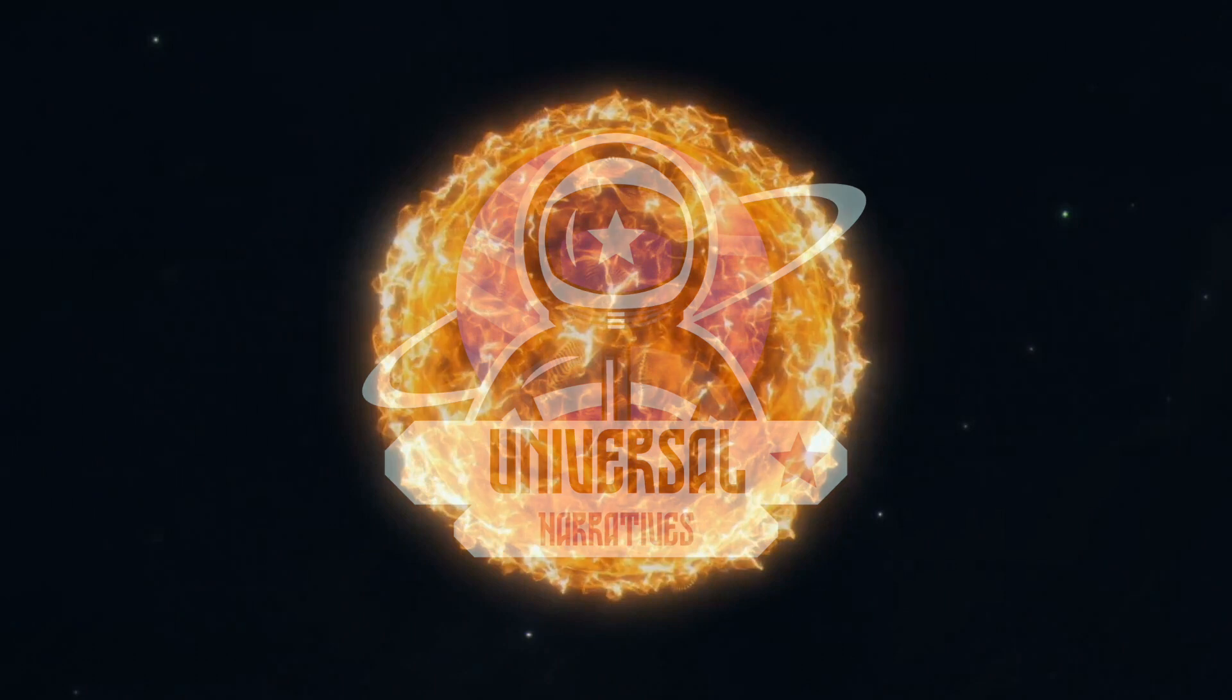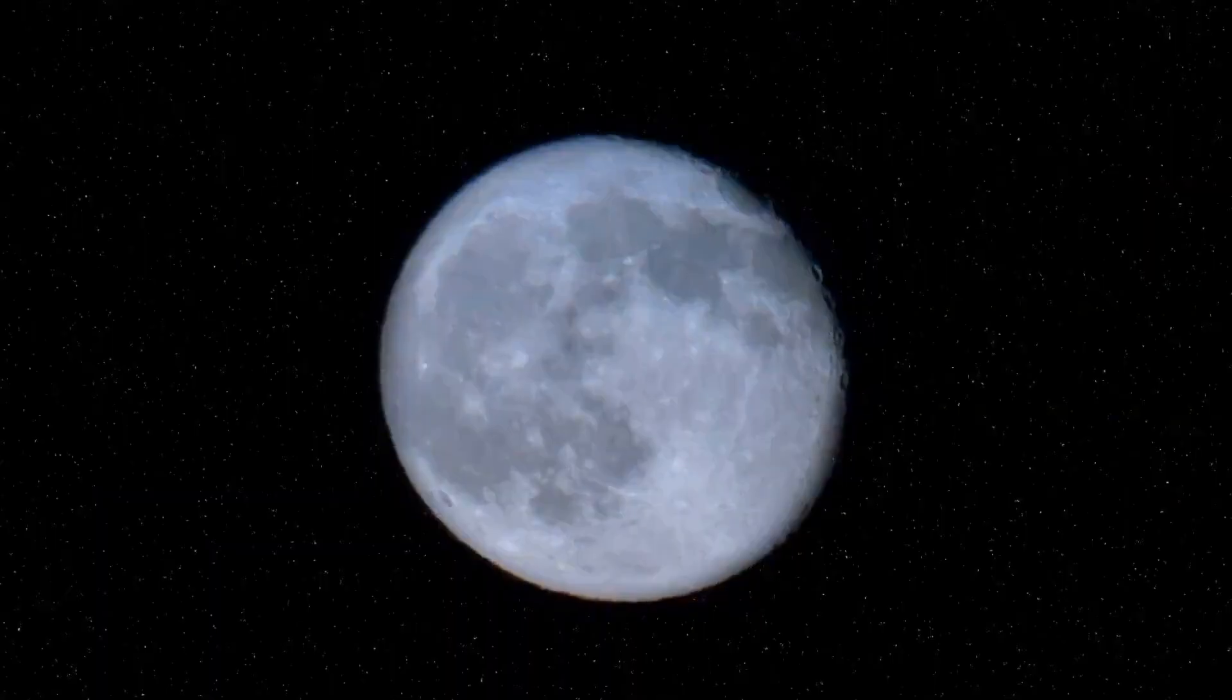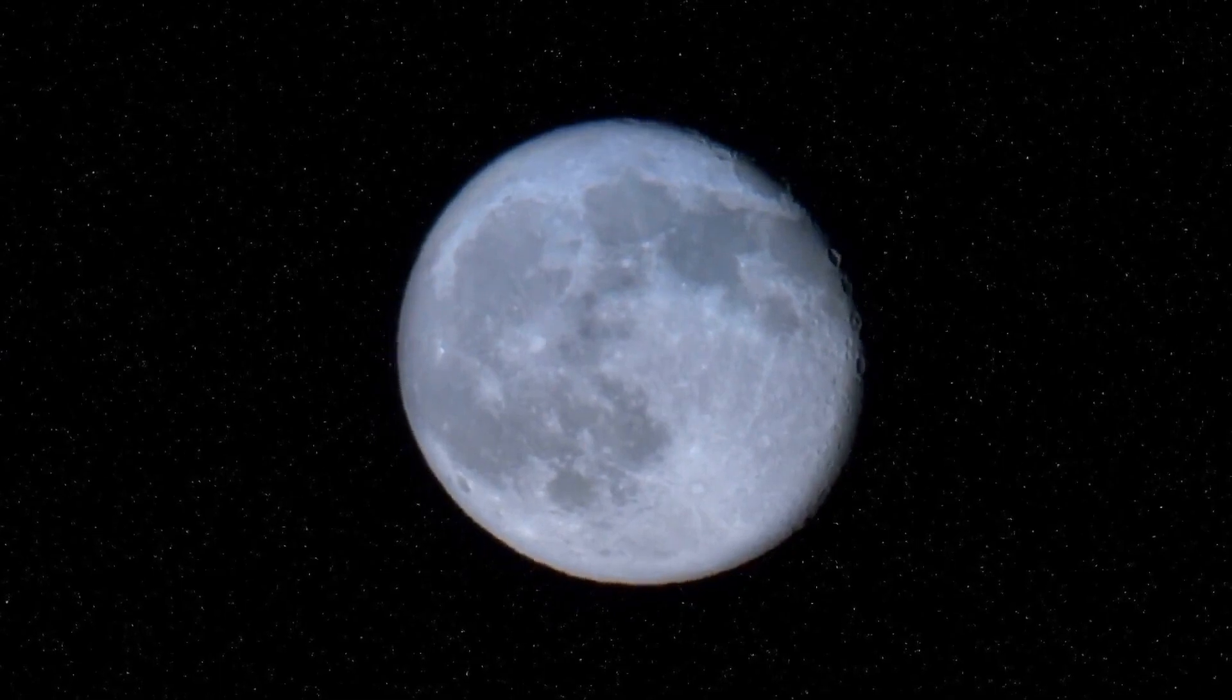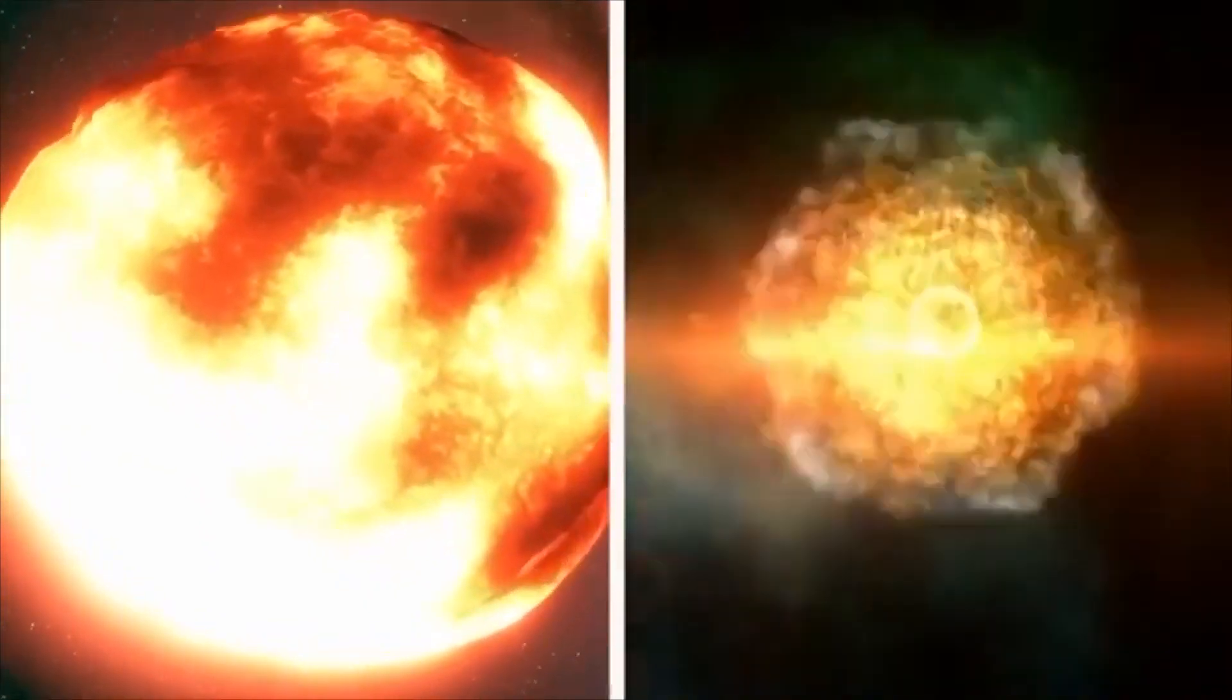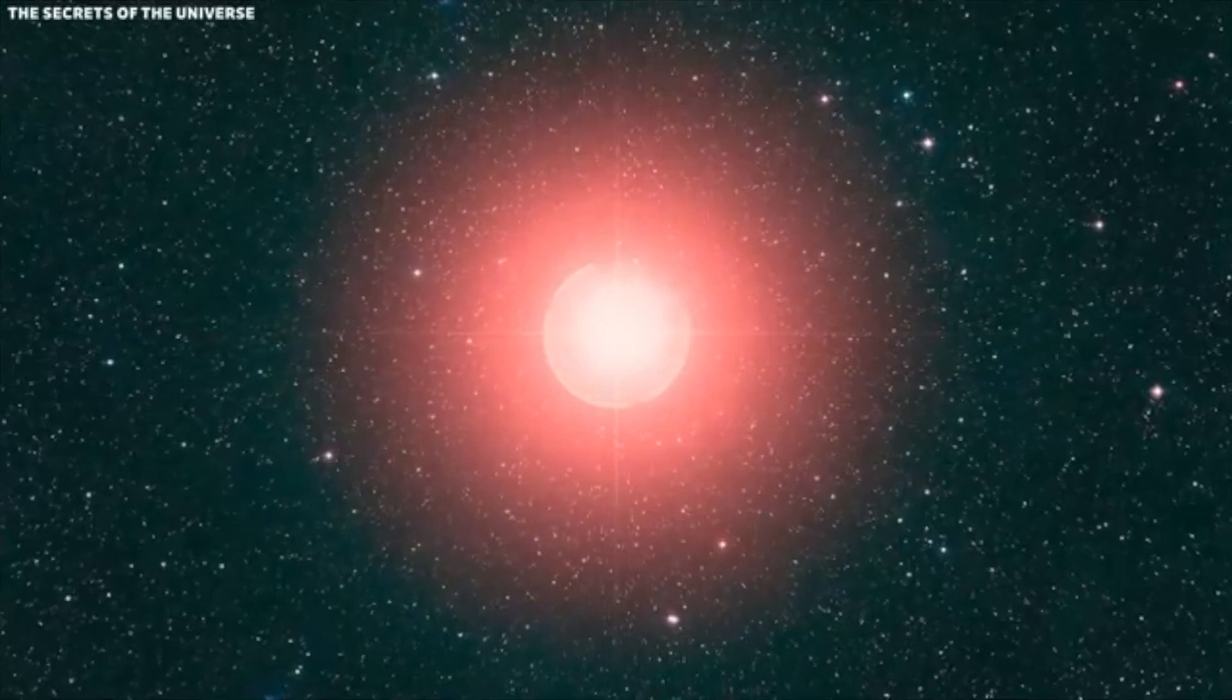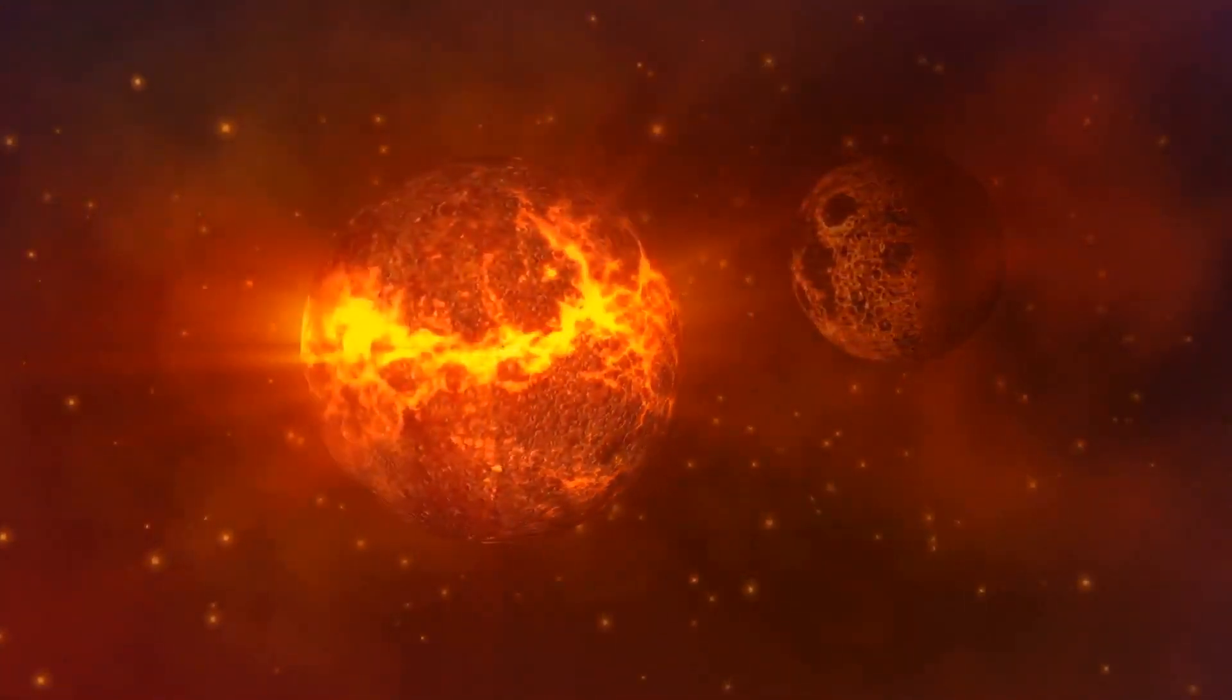In the vast expanse of the cosmos, the tale of Betelgeuse beckons. Located a staggering 650 light-years away, in the heart of the Orion constellation, this isn't just any celestial body. It's a red supergiant, radiating with a brilliance over 100,000 times our own sun. Beyond its sheer luminosity, Betelgeuse holds a deep connection to human history and culture, its name echoing across millennia.